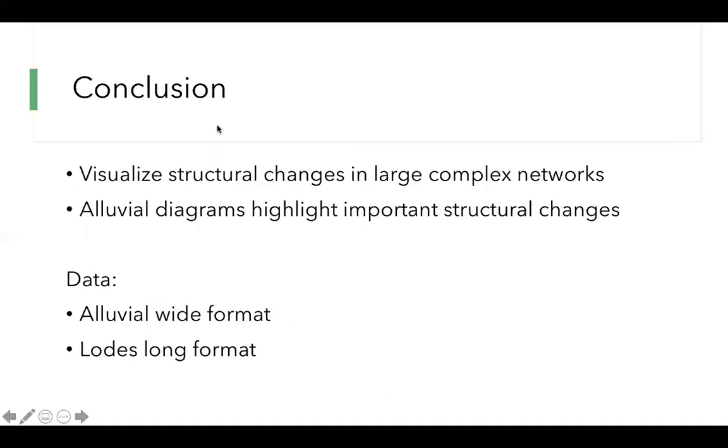And now I want to give a conclusion. Alluvial diagrams were originally developed to visualize structure change in large complex networks. They can be used to visualize any type of change in group composition between states or over time and include statistical information to reflect significant change. Alluvial diagrams highlight important structural changes that can be further emphasized by color and make identification of major transitions easy.